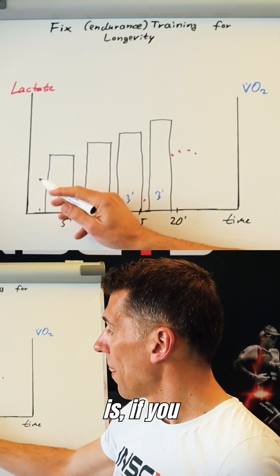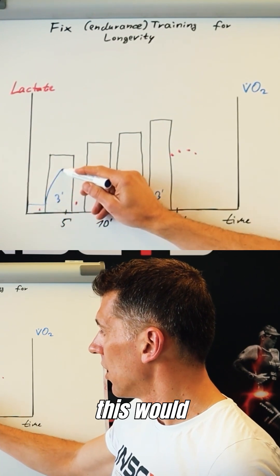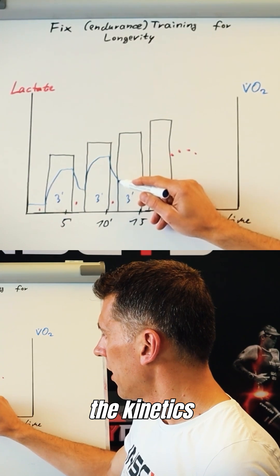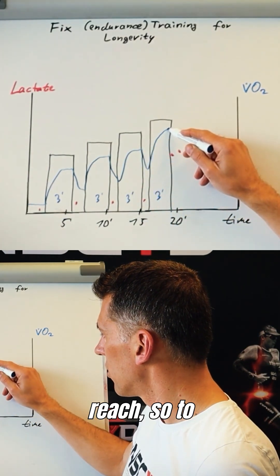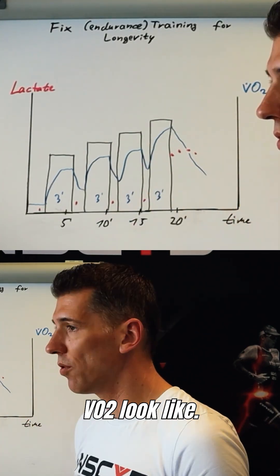There's another aspect to it, which is if you would look at the oxygen uptake. Oxygen uptake during something like this would basically show a kinetics like this one. And then at the end, you reach, so to speak, VO2 max, and then it's going down. So that's the pattern that VO2 would look like.